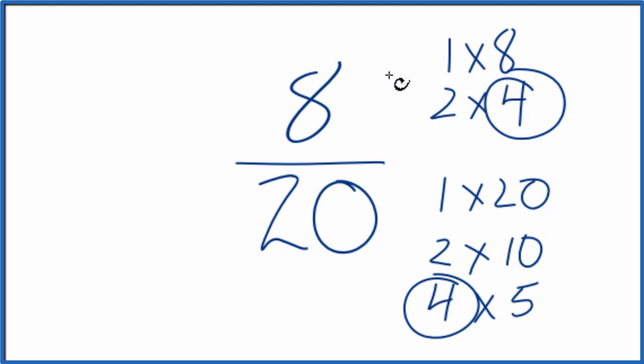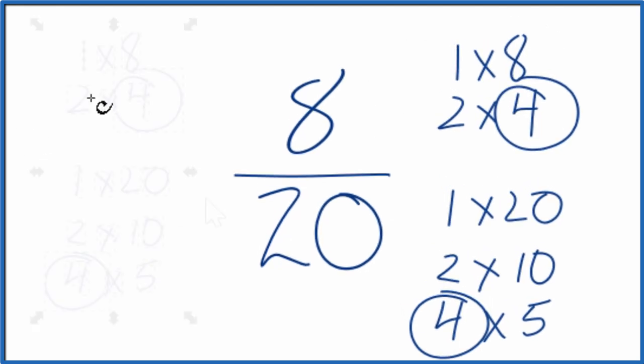So we'll divide 8 by 4 and then 20 by 4, and we'll have simplified 8/20. Let's move these over here.